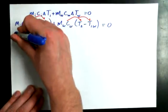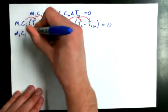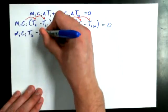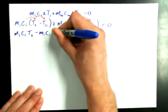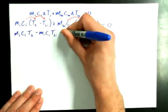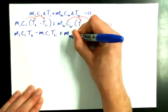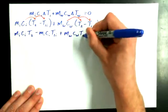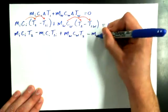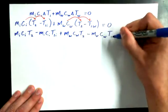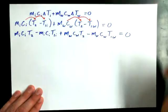And if you get ahead of me, get ahead of me. But we've got to do M-I-C-I-T2 minus M-I-C-I-T1-I plus, and multiplying through the second set of brackets, M-W-C-W-T2 minus M-W-C-W-T1-W, all equal to zero.